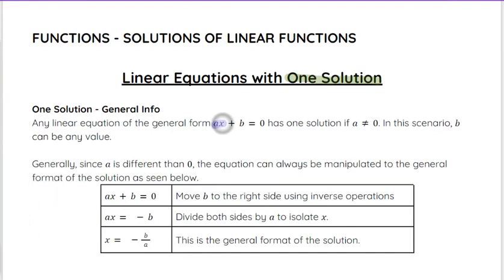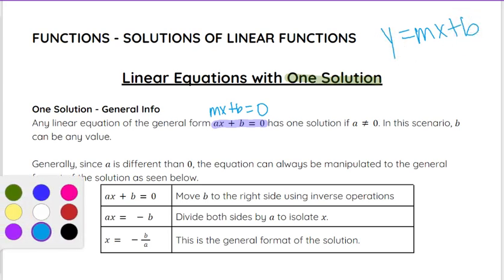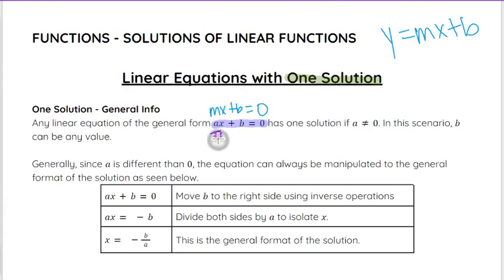There is a general format with AX plus B equals 0, or you could think of it as MX plus B equals 0 if you prefer to think of it as that same format as Y equals MX plus B, but with a 0 in the Y spot. So either way, sometimes we use A, sometimes we use M. But with any linear equation in that general format, it has one solution if A is not 0. So B can be any value, but as long as A is not 0 in this exact format, then it is one solution.